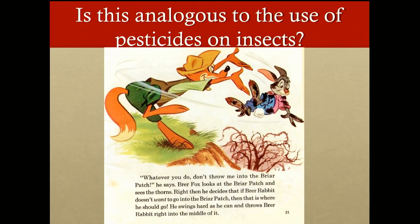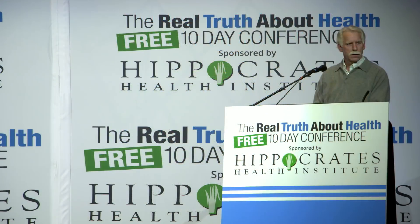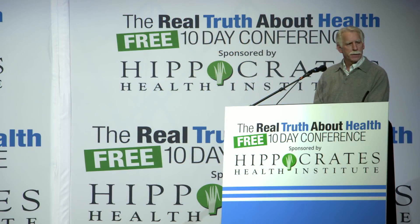And the more powerful the chemical, the shorter the amount of time needed to adapt. These are the rules of evolutionary biology. They've been spelled out for decades. We've known this since well before we started applying artificial pesticides to our crops.